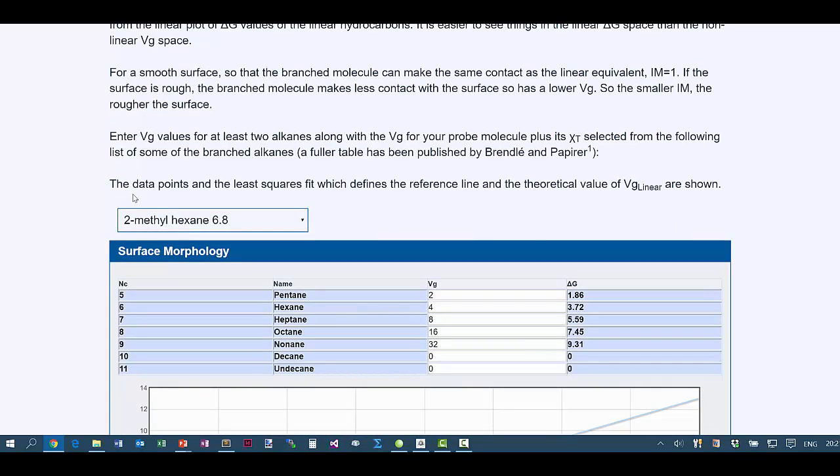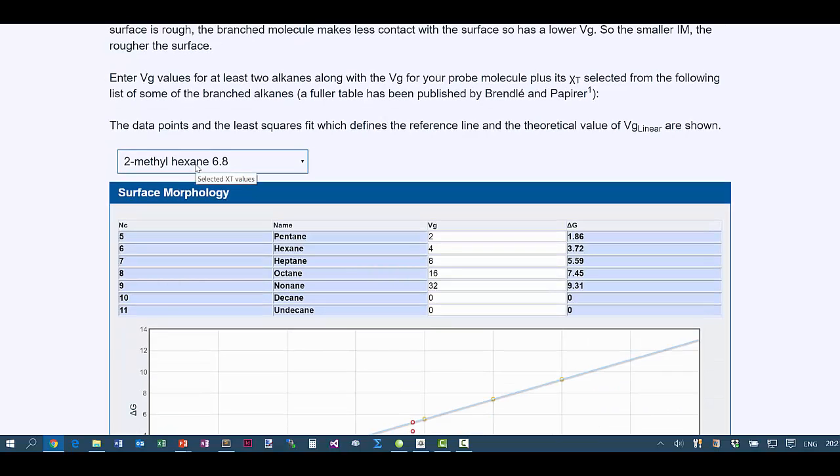We take something like 2-methylhexane, and although that's a 7-carbon alkane which might behave like heptane, it actually behaves like a 6.8-carbon alkane.